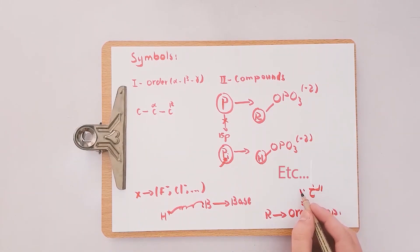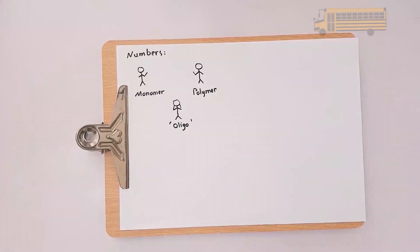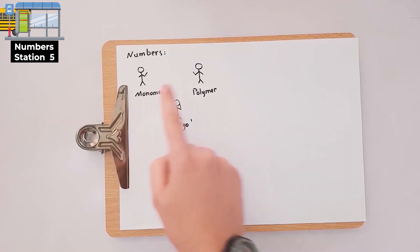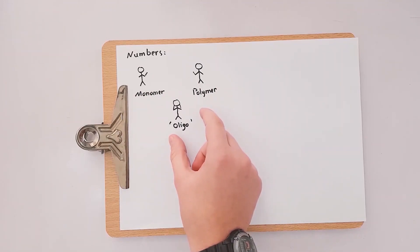Now we have reached the fifth and final crucial thing in this station which is the numbers. Everyone knows what's a monomer and everyone knows what's a polymer, however there is a strong debate on the one in between: the oligomer.